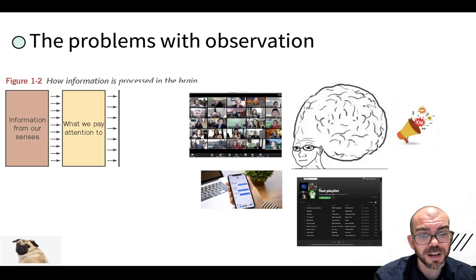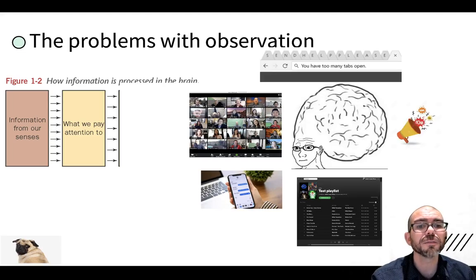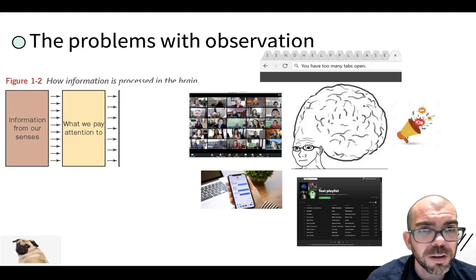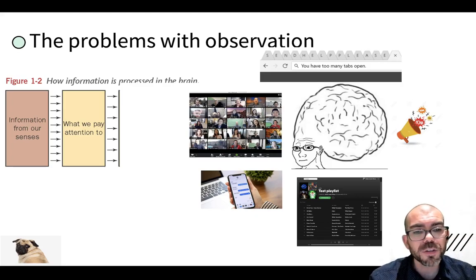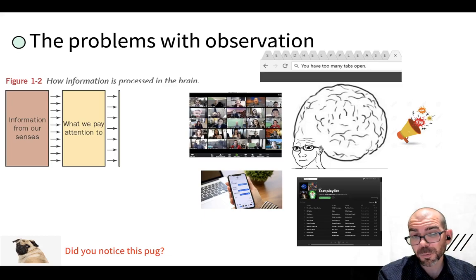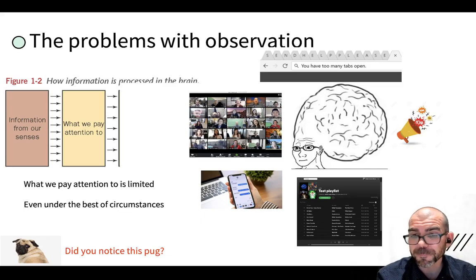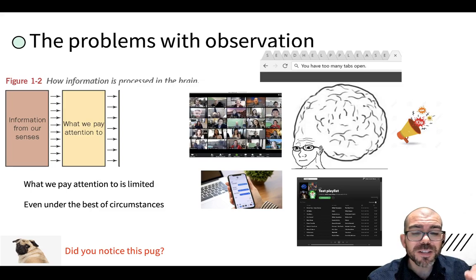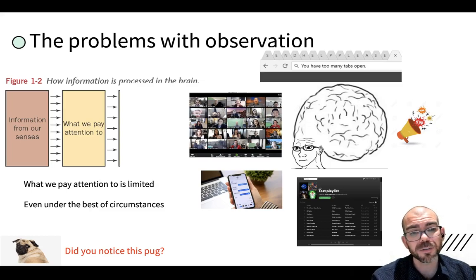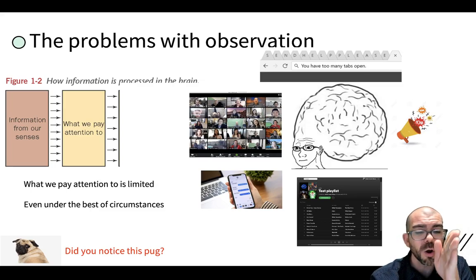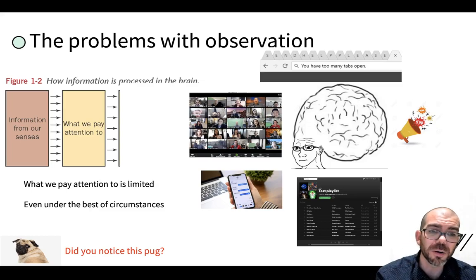You've got the Zoom chat going, you've got text messages from other people, you've got your Spotify playlist, you've got noises in the environment — we all have too many tabs open. When we have all of this occurring at once — by the way, did you notice that pug in the corner? Probably not. What we pay attention to is very, very limited. Even under the best of circumstances our minds are constantly selectively choosing what we pay attention to and what we don't.